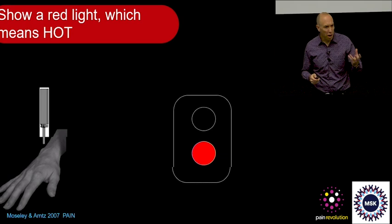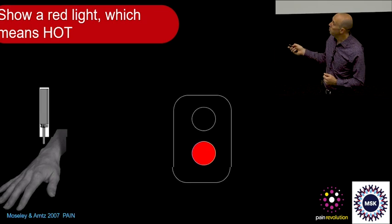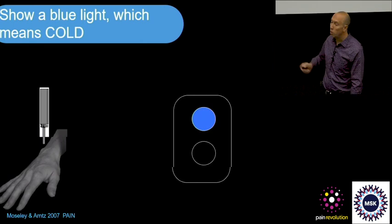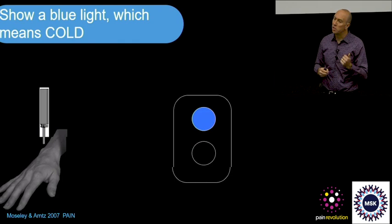And then we showed them, at the same time, either a red light, because red means hot and danger. Or for some of the trials, we showed them a blue light. And blue means safety and cool.